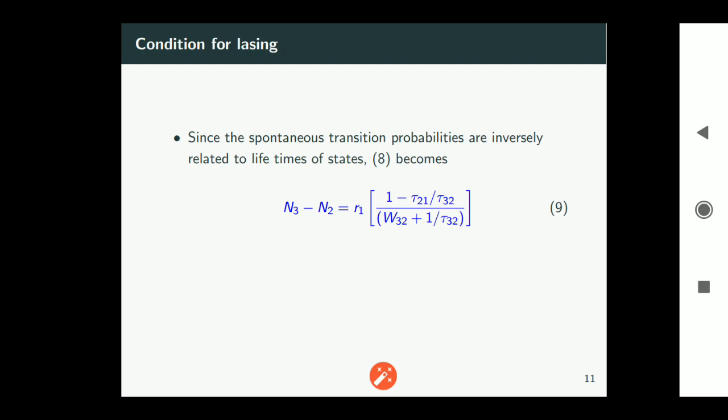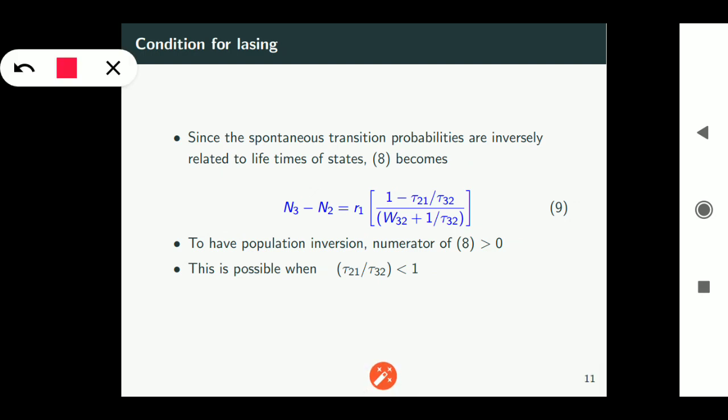So population inversion happens if n3 minus n2 is more than 0. If that is the case then we say that population inversion exists. And that can happen only if the numerator of equation 9 is more than 0. So that means tau21 by tau32 should be less than 1.